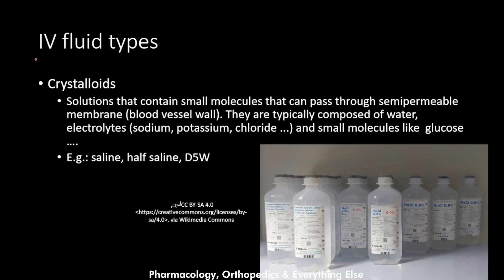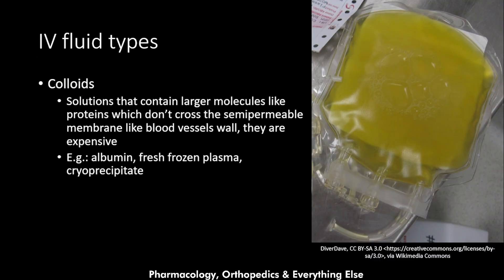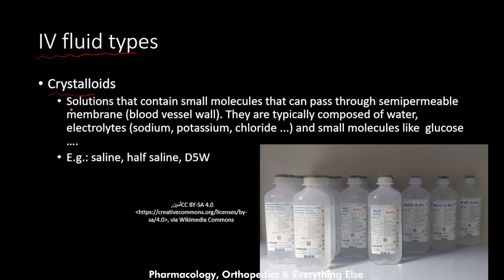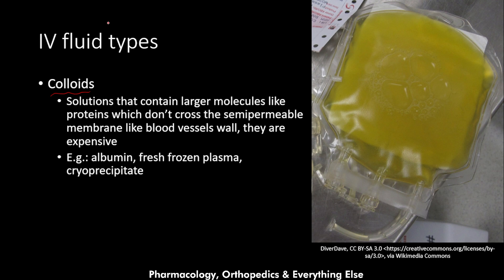Let's start by talking about the intravenous fluid types. We have two major types: the crystalloids and the colloids. Crystalloids are solutions that contain small molecules that can pass through semipermeable membranes like the blood vessel walls. They are typically composed of water, electrolytes like sodium, potassium, and chloride, and small molecules like glucose. Examples of crystalloids are normal saline, half saline, and dextrose 5% in water.